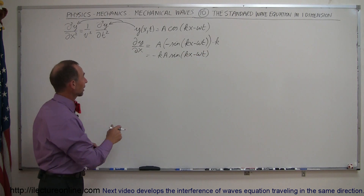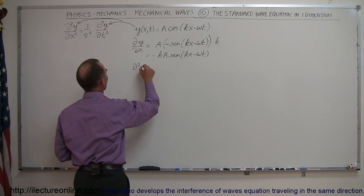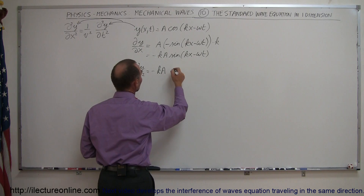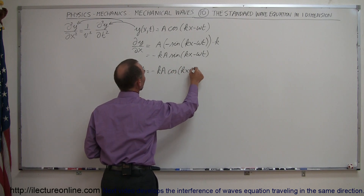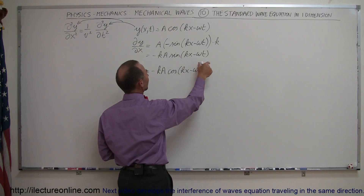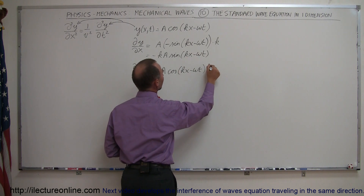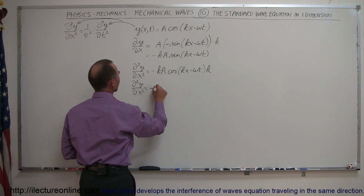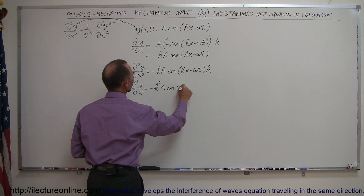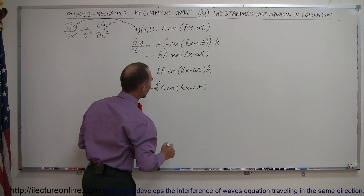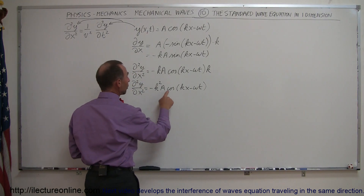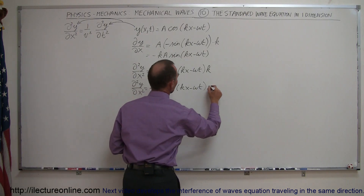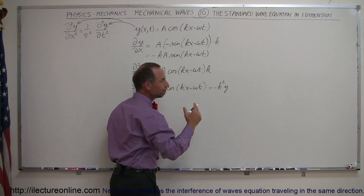Now we go ahead and take the derivative again the second time. So the second partial of y with respect to x equals — taking the derivative of this gives minus ka. The derivative of the sine is the cosine of kx minus omega t, and then we multiply times the derivative of the angle, which again gives us k. So the second partial derivative of y with respect to x is equal to minus k squared a times the cosine of kx minus omega t. Notice that a cosine of kx minus omega t is my original function y, so this is equal to minus k squared y.